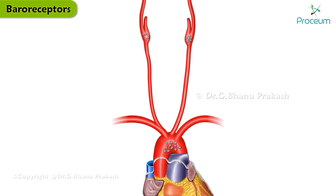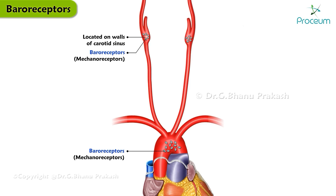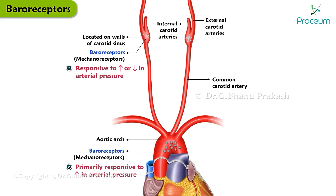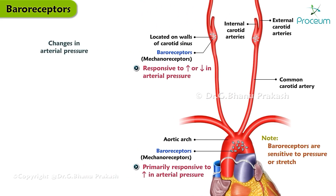The baroreceptors are mechanoreceptors located in the adventitia of the walls of the carotid sinus, where the common carotid artery bifurcates into the internal and external carotid arteries, and the aortic arch. The carotid sinus baroreceptors are responsive to increases or decreases in arterial pressure, whereas the aortic arch baroreceptors are primarily responsive to increases in arterial pressure.